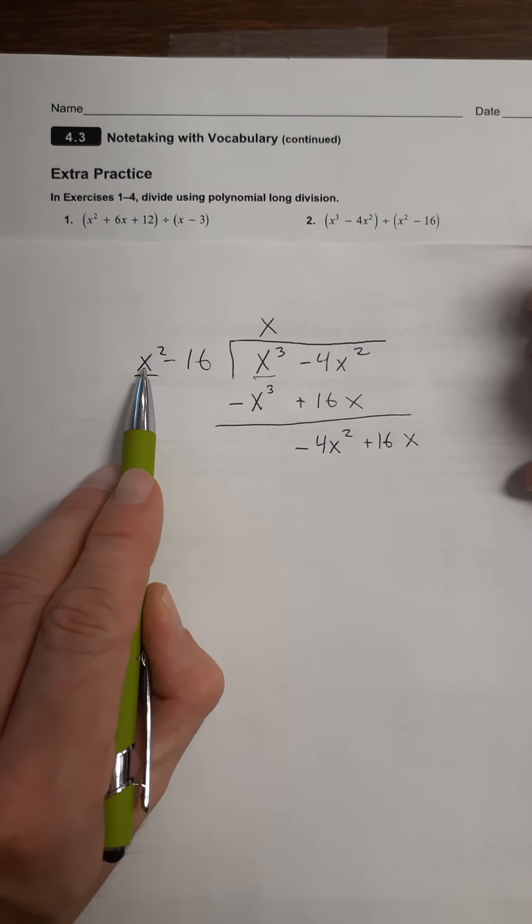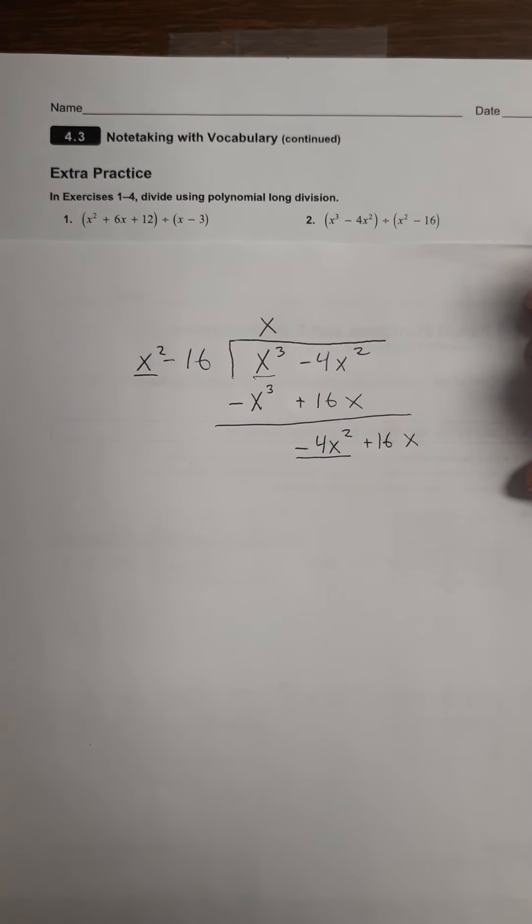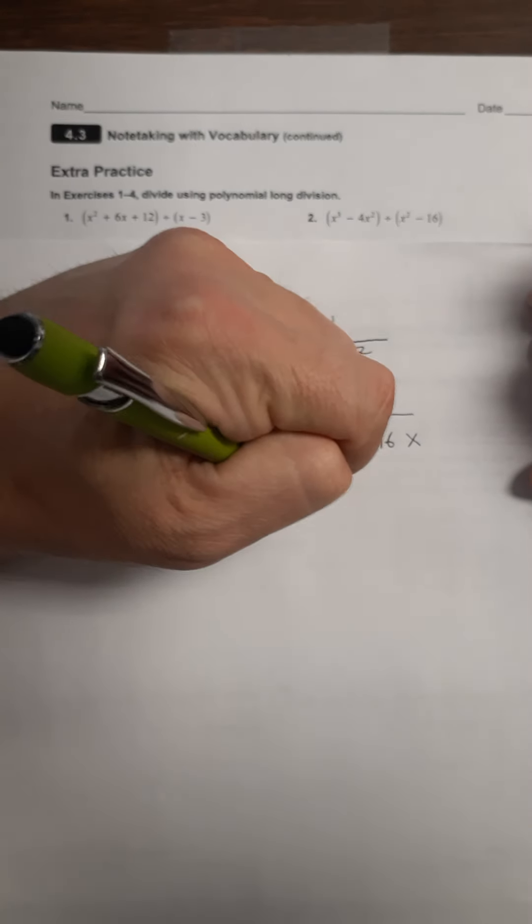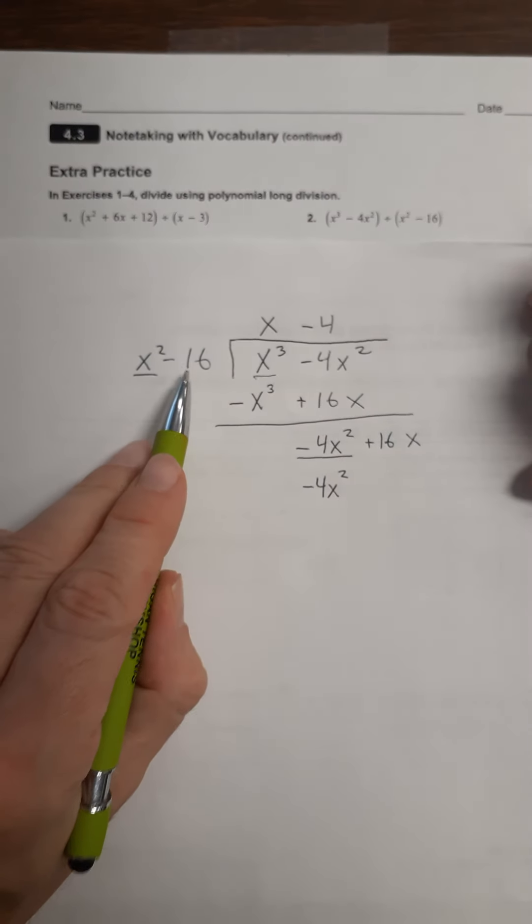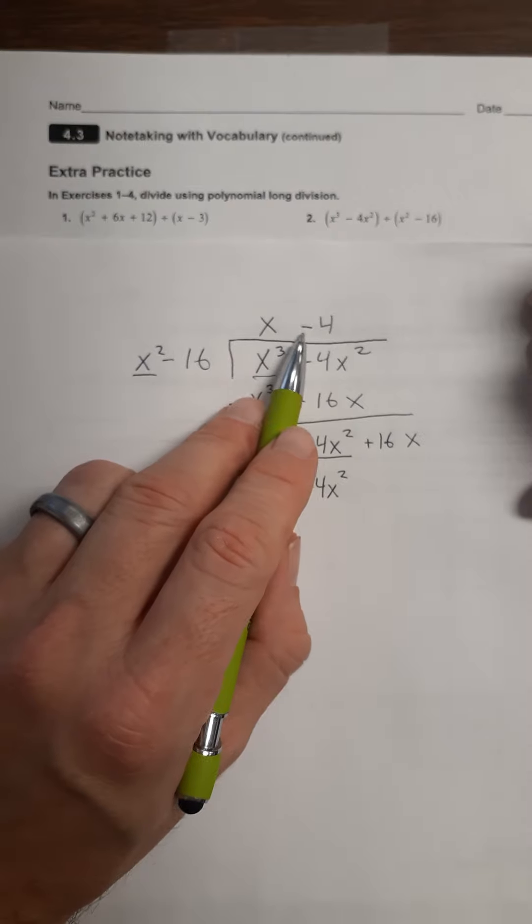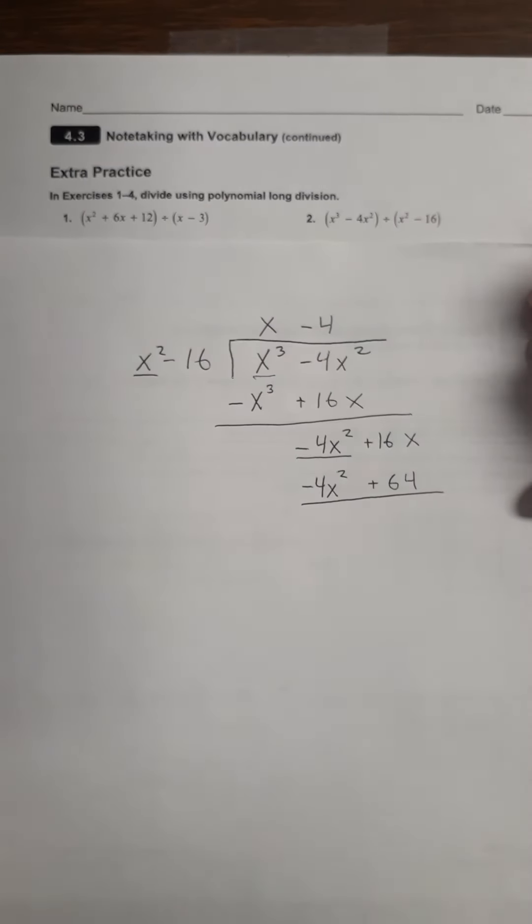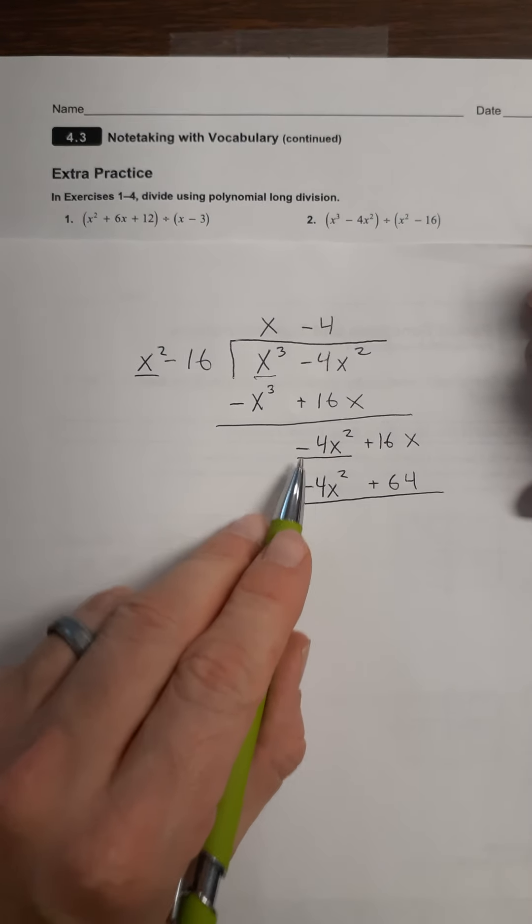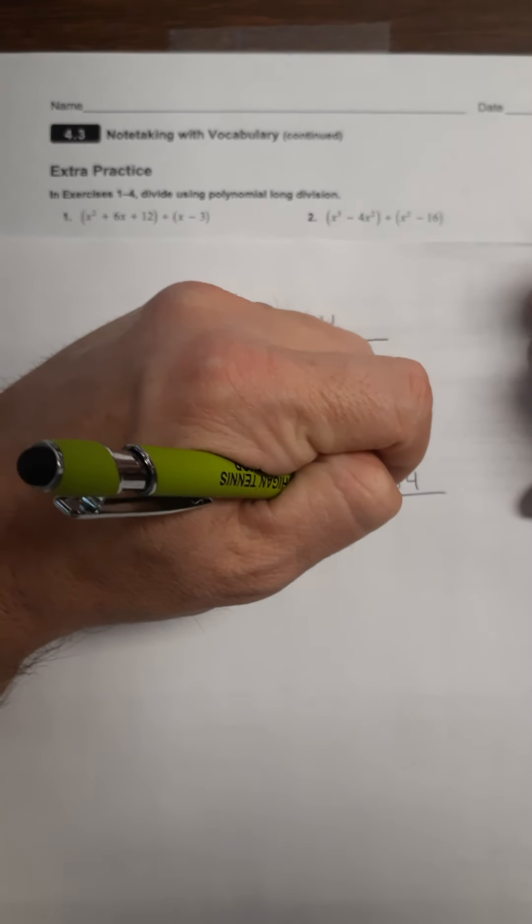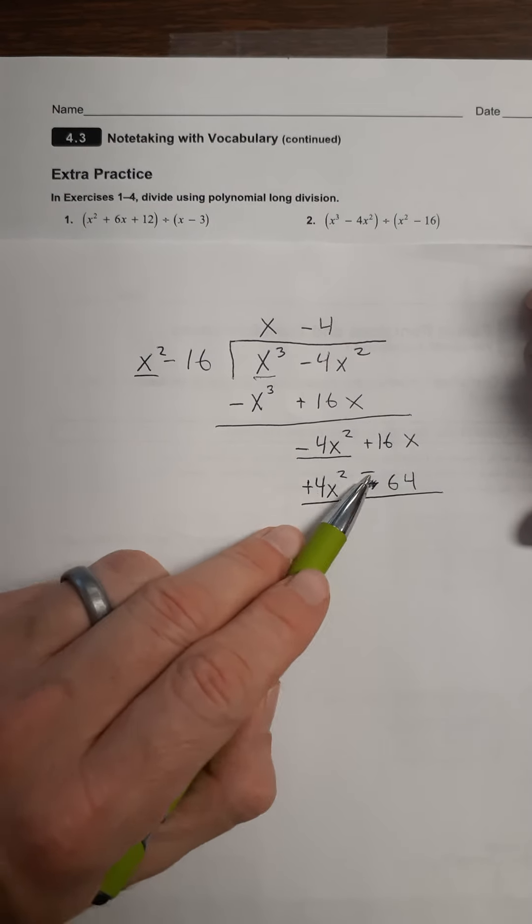So now I ask myself, what do I have to multiply this by to turn it into negative 4x squared? And the answer is negative 4. Negative 4 times x squared is negative 4x squared. If I multiply negative 16 times negative 4, negative times a negative is a positive, so that's going to be plus 64. Change the sign of this so that they'll cancel out because if they're both minuses, they won't cancel out. So plus, which means I have to change the sign of this one to a negative. So these cancel out, and now I have 16x minus 64.